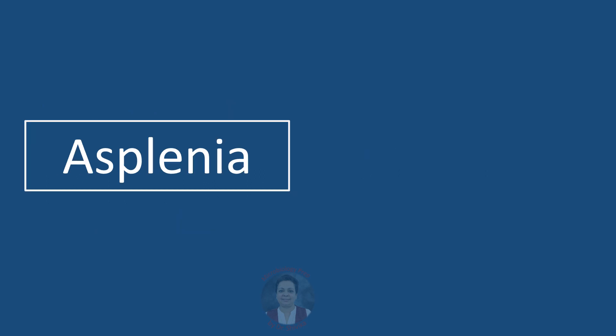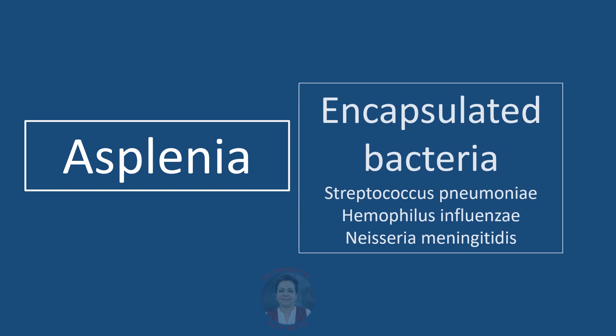If we have a patient with functional or anatomical asplenia, the pathogens which can cause disease in such patients are encapsulated bacteria — specifically Streptococcus pneumoniae, Haemophilus influenzae, and Neisseria meningitidis.